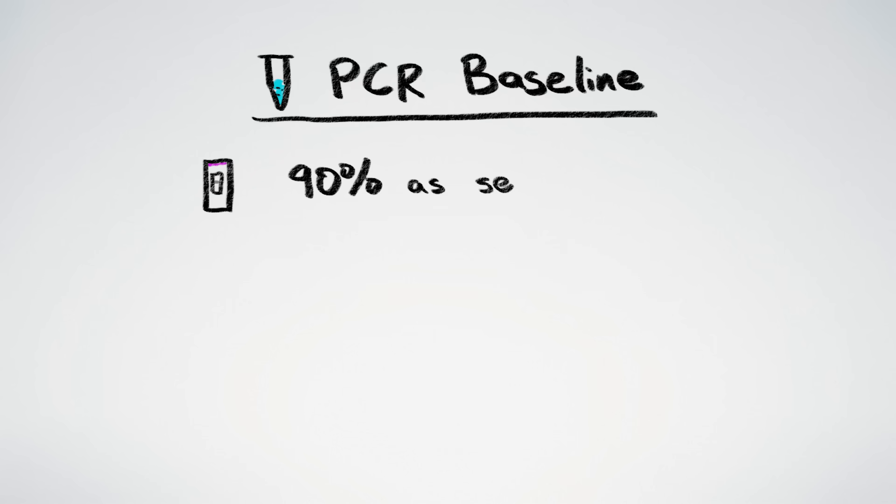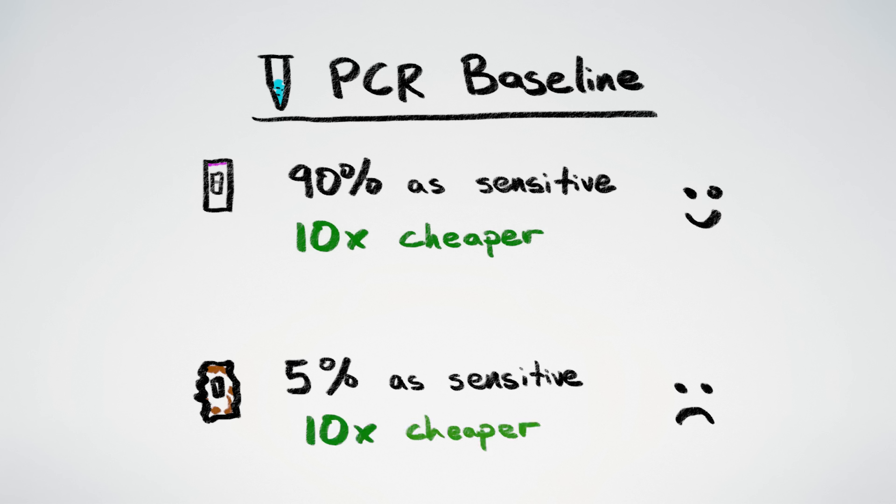When a rapid test is just a little less sensitive than PCR, then the downsides of missing some infected people can be balanced out by the benefits of more widespread and frequent testing. But this only works up to a point. If the sensitivity of the rapid test is too low, the cost of missing many infections will outweigh the benefits of widespread testing. Luckily, the rapid tests for COVID are fairly close to PCR in their sensitivities.